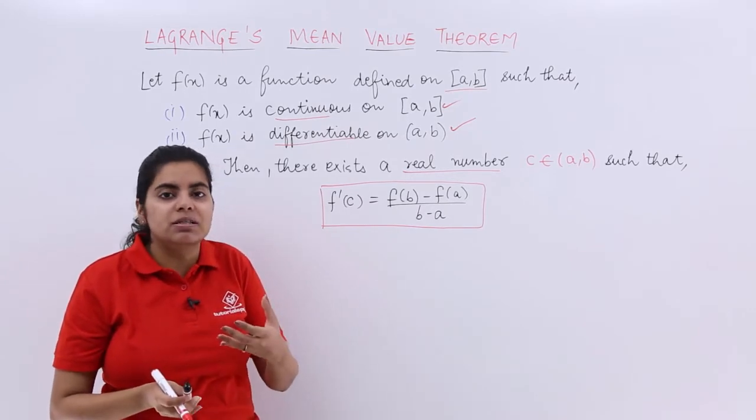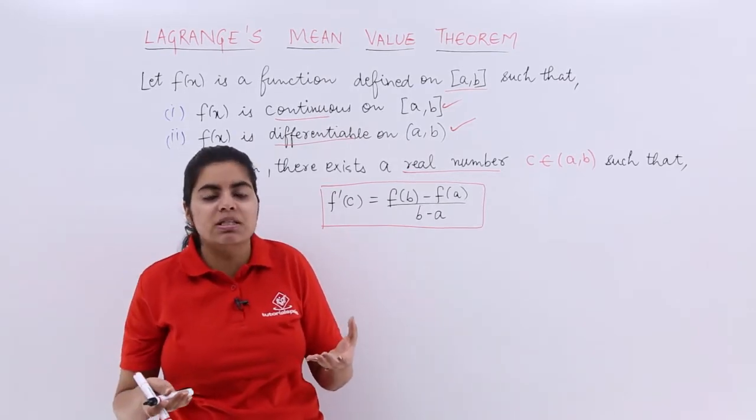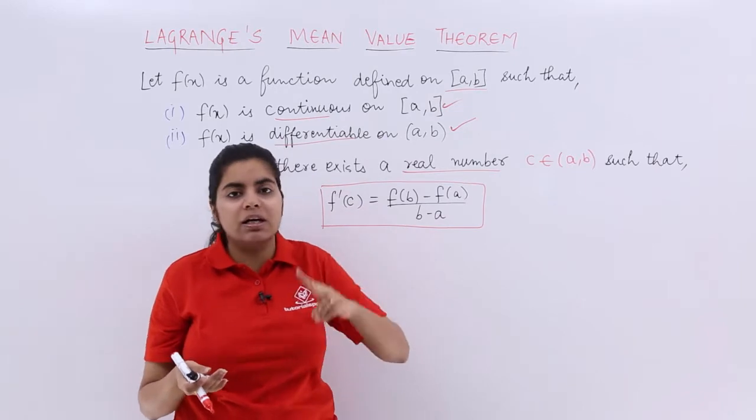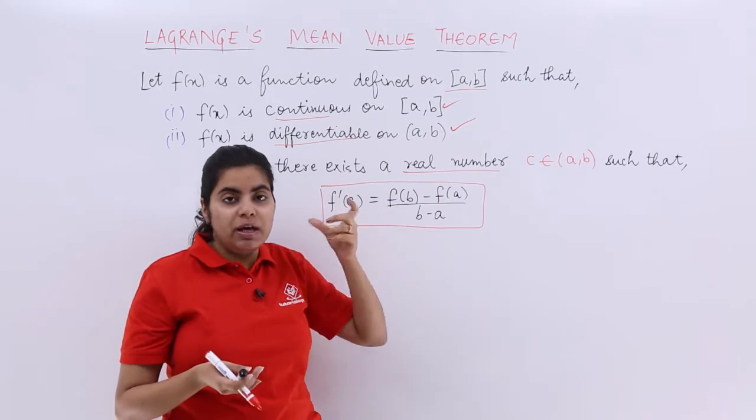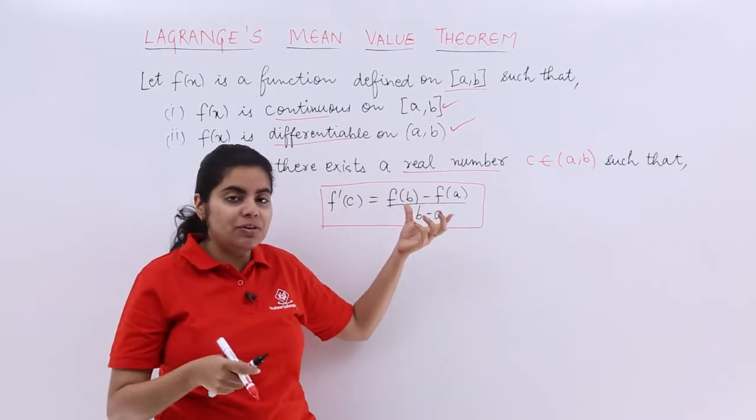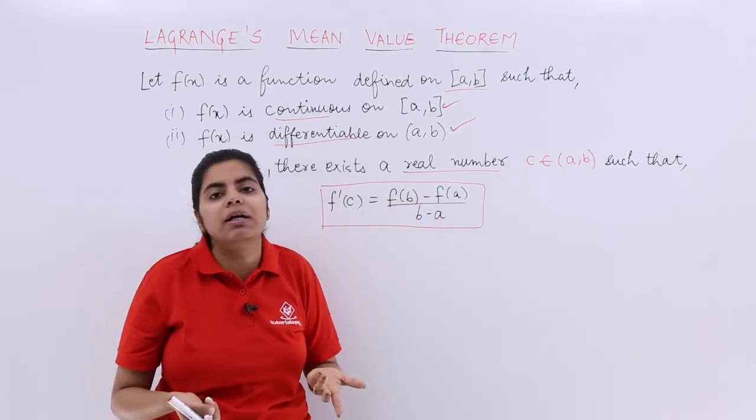The key difference between Rolle's Theorem and Lagrange's Mean Value Theorem is that in Rolle's Theorem, the third condition f(b) = f(a) exists. Therefore, if this formula was applied in Rolle's Theorem, it would automatically become 0.